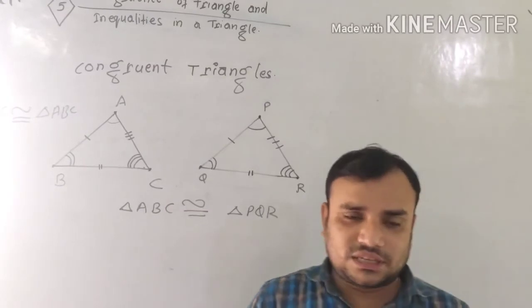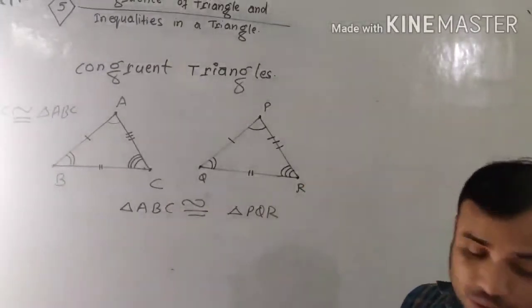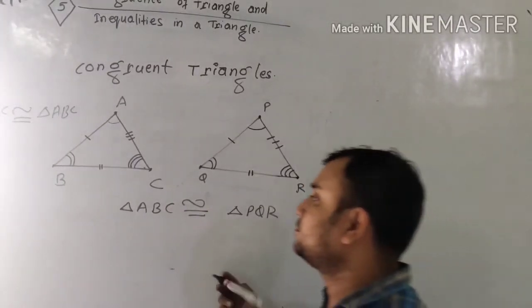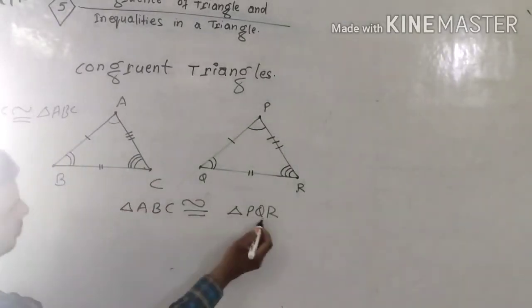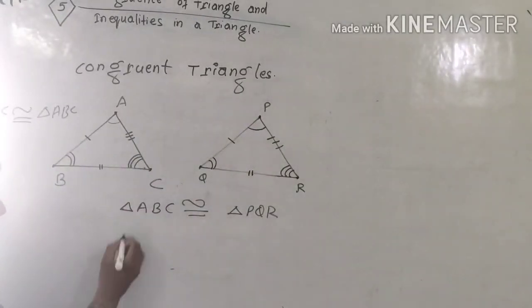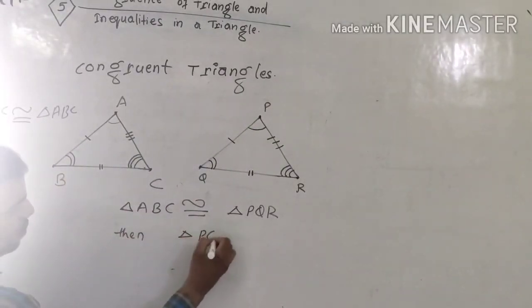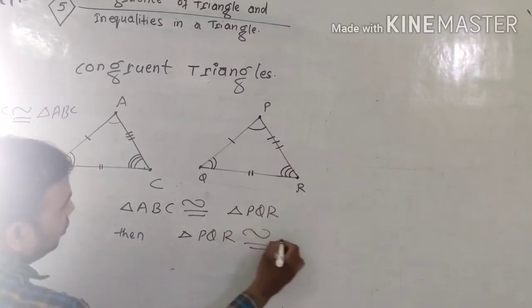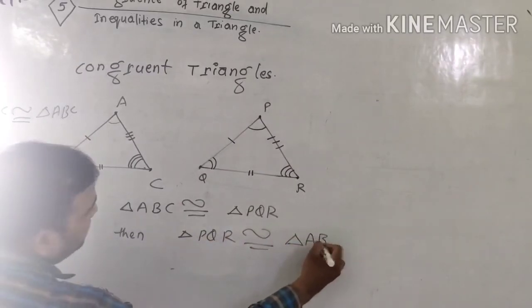If triangle ABC is congruent to triangle PQR, then triangle PQR is also congruent to triangle ABC.